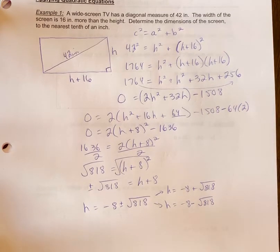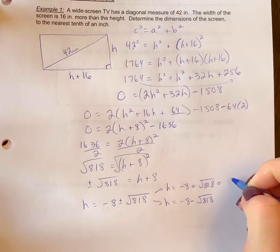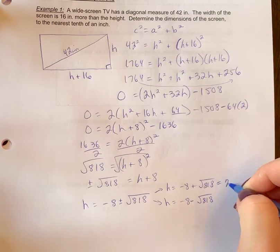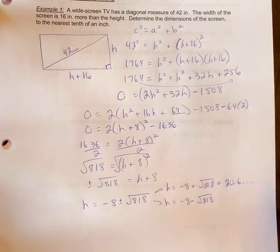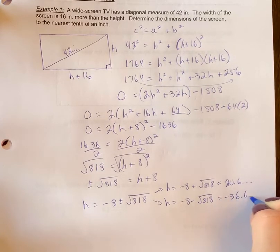Okay, so grab your calculators. You can pause the video while you put this in your calculator to make sure you know how to do that. So once you do that, you're going to get 20.6 something. And the negative one was negative 36.6.